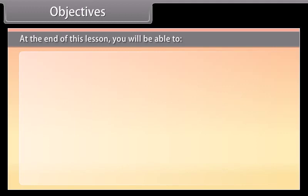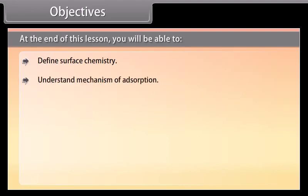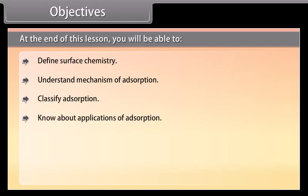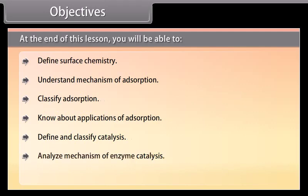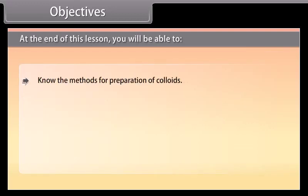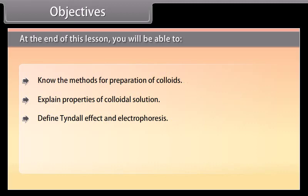At the end of this lesson, you will be able to: define surface chemistry; understand the mechanism of adsorption; classify adsorption; know about applications of adsorption; define and classify catalysis; analyze the mechanism of enzyme catalysis; define and classify colloids; know the methods for preparation of colloids; explain properties of colloidal solution; define Tyndall effect and electrophoresis; define emulsions; and know about applications of colloids.